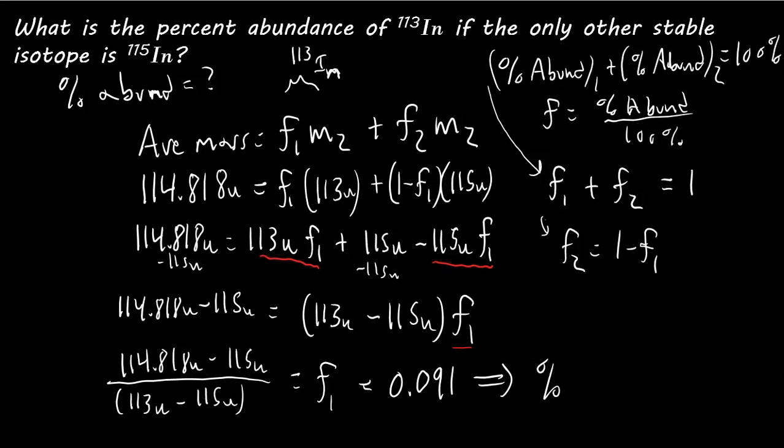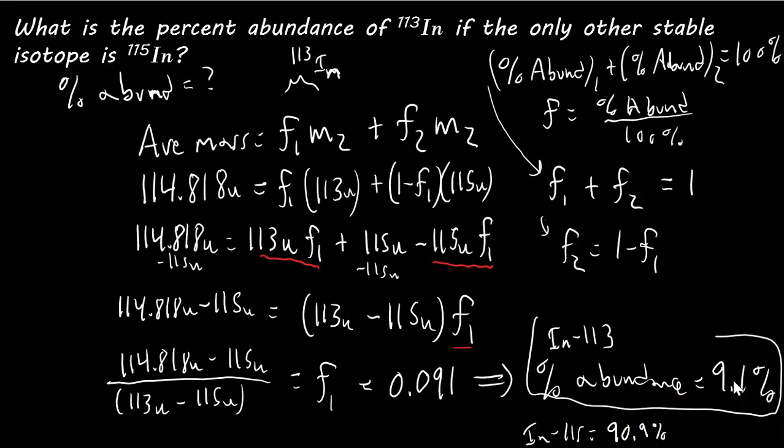So, the percent abundance equals, multiply that by 100. So, 9.1%. This is of indium 113. So, the percent abundance of indium 115, of course, would be 100 minus that. So, 90.9%, that would be the other one. But, this is the one we're solving for, right here.